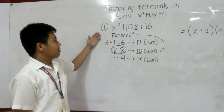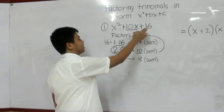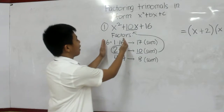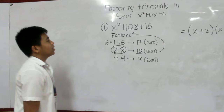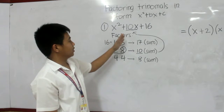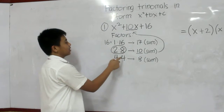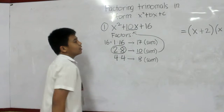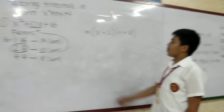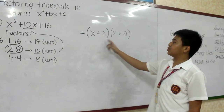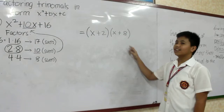This is the given. First thing to do is to find the factors of 16. And this is all the factors of 16. But you need to get the sum that equals the middle term, which is 2 plus 8 is equal to 10. So the answer is the quantity x plus 2 times the quantity x plus 8. Thank you.